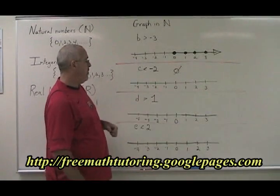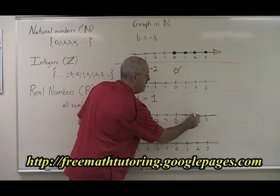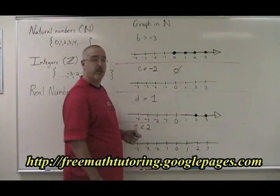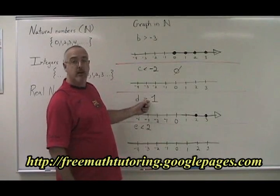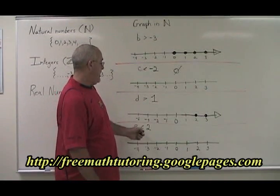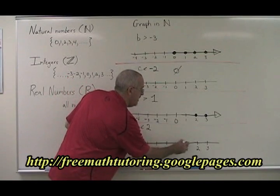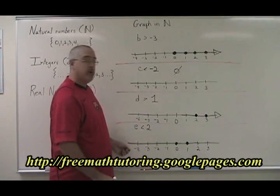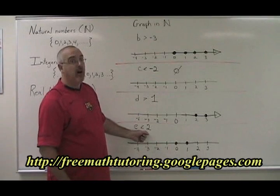d greater than one: the natural numbers greater than one start with two, then three, and going on forever in a positive direction. You have to remember not to include one in your answer, because it is equal to one — it is not greater than one. e less than two: one is less than two, zero is less than two, and we have to stop. None of the negative numbers can be included because they're not natural, and two cannot be included because it is not less than two.